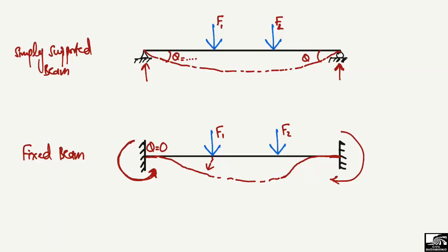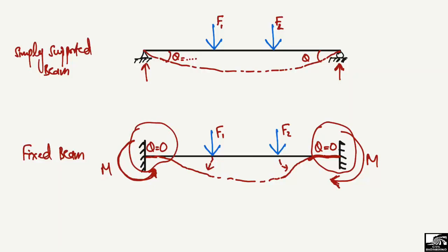In the simply supported beam there will be some slope, but in the fixed beam the slope is equal to zero and the deflection is also equal to zero at the supports. Due to the applied load, the beam tries to deflect, and the fixed supports create moments in the opposite direction to resist that deflected shape. This is the main behavior of the fixed beam — it will not show any deflection or slope at the fixed supports.